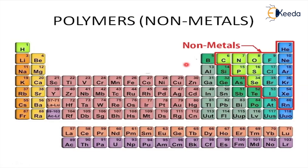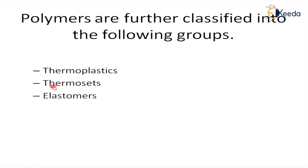Polymers are classified into the following groups: thermoplastics, thermosets, and elastomers. In this video, I am just discussing classification, so I am not giving a detailed explanation of all of these. In the next video, I will explain the total properties. This video is concentrating on classification.